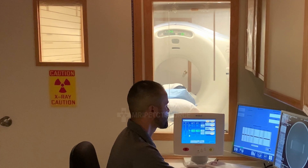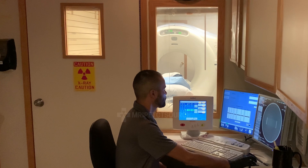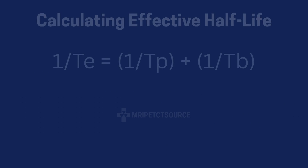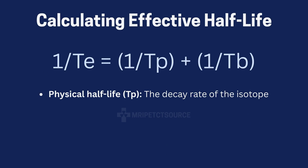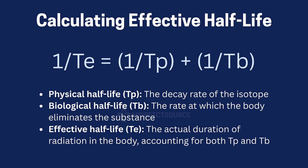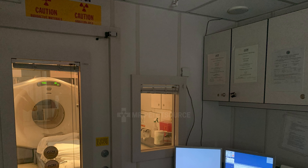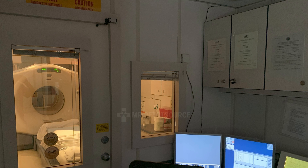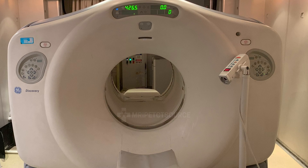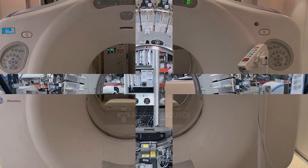If you want to calculate how long a patient is radioactive after a PET contrast injection, you can use this formula, where Tp equals physical half-life, Tb equals biological half-life, and Te equals the effective half-life. This formula allows for a more precise estimate of how long patients emit detectable radiation following a PET scan.